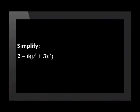Simplify the expression 2 minus 6, open brackets, y squared plus 3x cubed, close brackets. This expression has two terms, and we can see that by the minus that separates them. The first term is 2, and the second term is 6, open brackets, y squared plus 3x cubed. Applying BODMAS, we first try to simplify what's in the brackets.